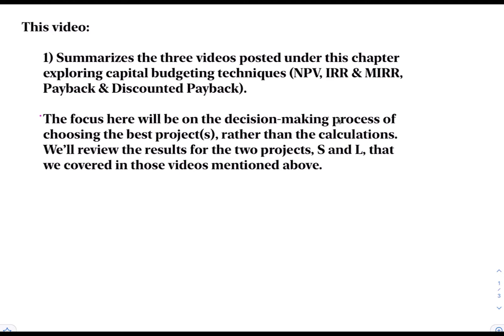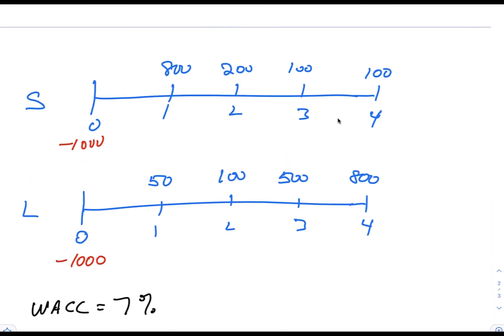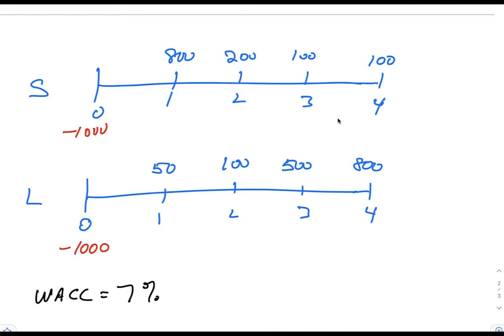So what were projects S and L? Project S stands for cash flows that come sooner rather than later — the cash flows start at $800 for period 1, then 200, 100, and 100, so it tails down. The cost is $1,000. Project L is where the cash flows come later: 50, 100, 500, and 800. Project L also has a $1,000 cost. We have a weighted average cost of capital (WACC) of 7%, used when computing net present value, modified internal rate of return, and discounted payback.